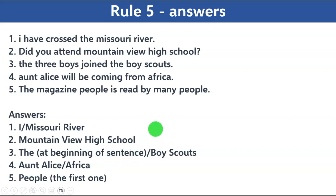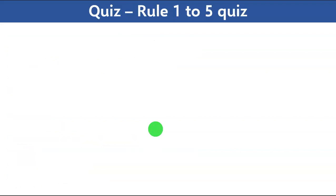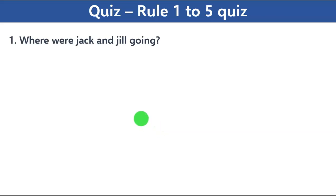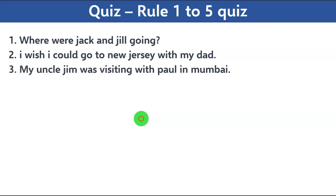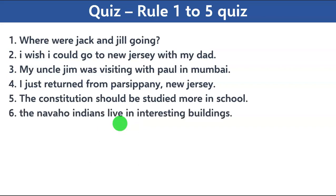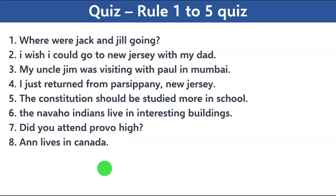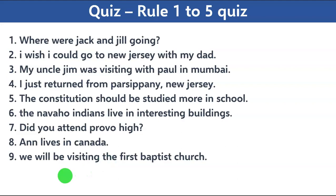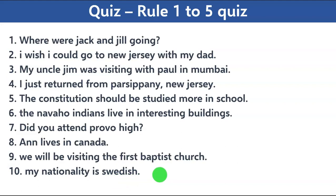Now we're going to take a consolidated quiz from rule number one to five — there are 10 questions. Number one: 'where were jack and jill going?' Number two: 'i wish i could go to new jersey with my dad.' Number three: 'my uncle jim was visiting with paul in mumbai.' Number four: 'i just returned from parsipani new jersey.' Number five: 'the constitution should be studied more in school.' Number six: 'the navajo indians live in interesting buildings.' Number seven: 'did you attend provo high?' Number eight: 'ann lives in canada.' Number nine: 'we will be visiting the first baptist church.' Number ten: 'my nationality is swedish.' Please pause the video as needed and then we'll look at the answers.